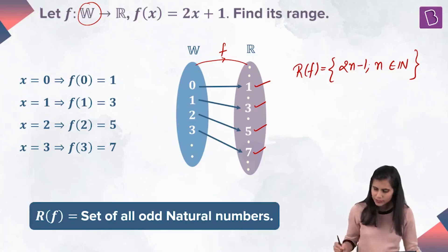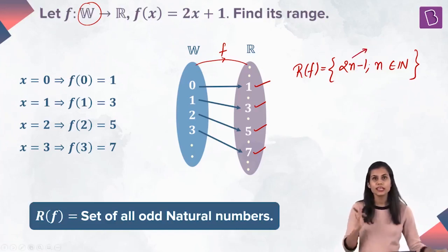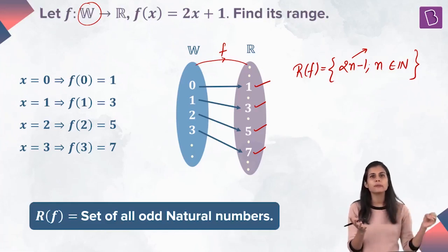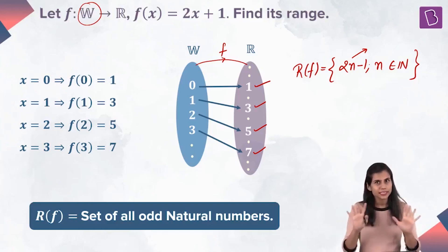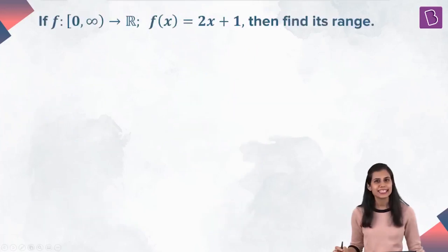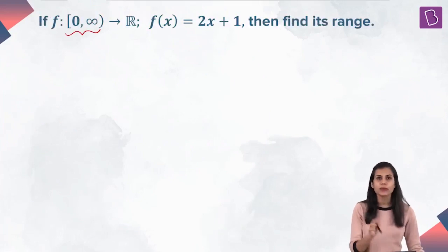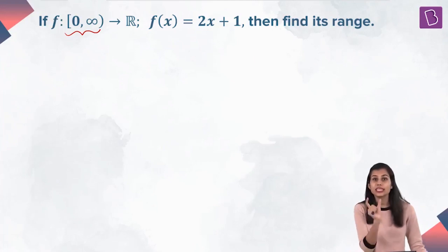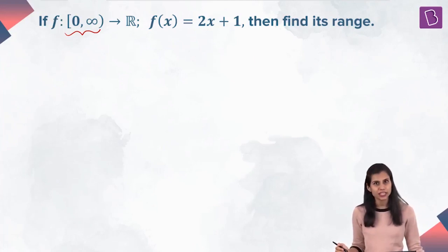Any odd natural number looks like this. f is like a machine — when you are inputting whole numbers inside the machine, the output is coming out to be odd natural numbers. Now I want to find the range of the same function but this time corresponding to a different domain. This time the domain is not a discrete or finite set — it's a continuous piece of the real line. So I can no longer use the arrow diagram approach; I will be using the graphical approach to find the range.